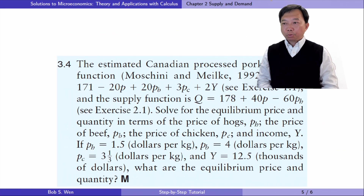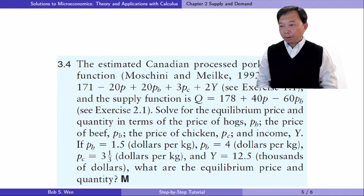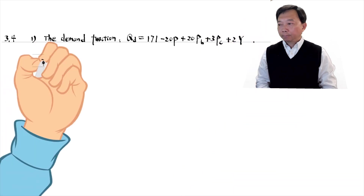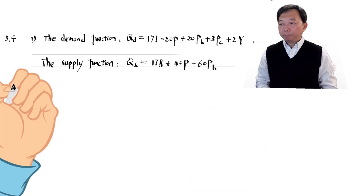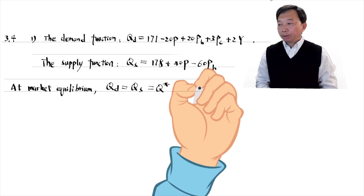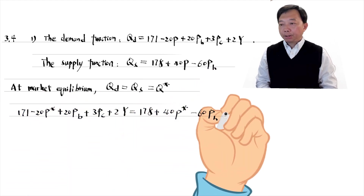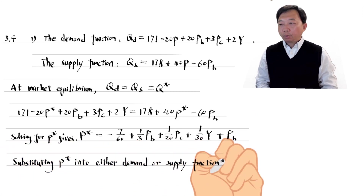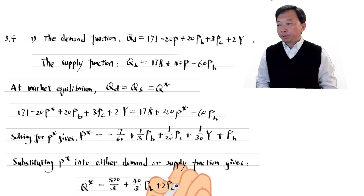Let's solve exercise 3.4. Here are the estimated Canadian processed pork demand function and supply function. Solve for the equilibrium price and quantity in terms of the price of hogs, the price of beef, the price of chicken, and income. If these factors are at the typical values, what are the equilibrium price and quantity? In the first step, we find the equilibrium price and quantity. The quantity demanded equals the quantity supplied at the market equilibrium. Solving for P* gives the market equilibrium price. Substituting P* into either the demand or supply function gives the market equilibrium quantity. Notice that the equilibrium price and quantity are expressed in terms of the other goods' prices and income.